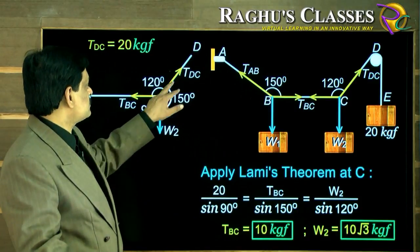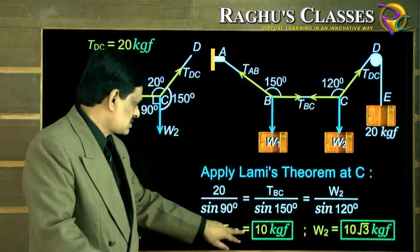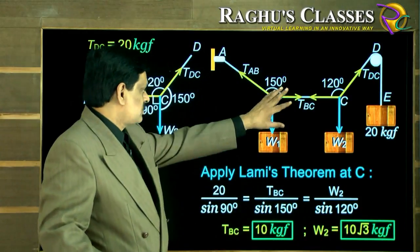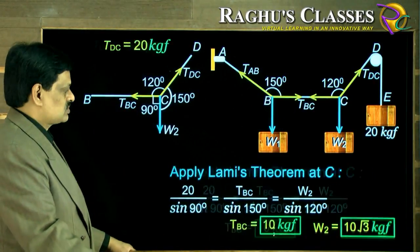This and that will give you W2 as 10 root 3 kgf. The one junction C has been solved using Lami's theorem.